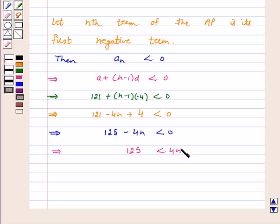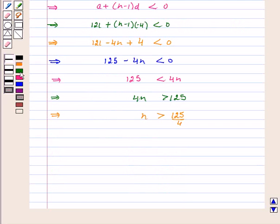4n or 4n is greater than 125. This implies n is greater than 125/4 or n is greater than 31 and 1/4.